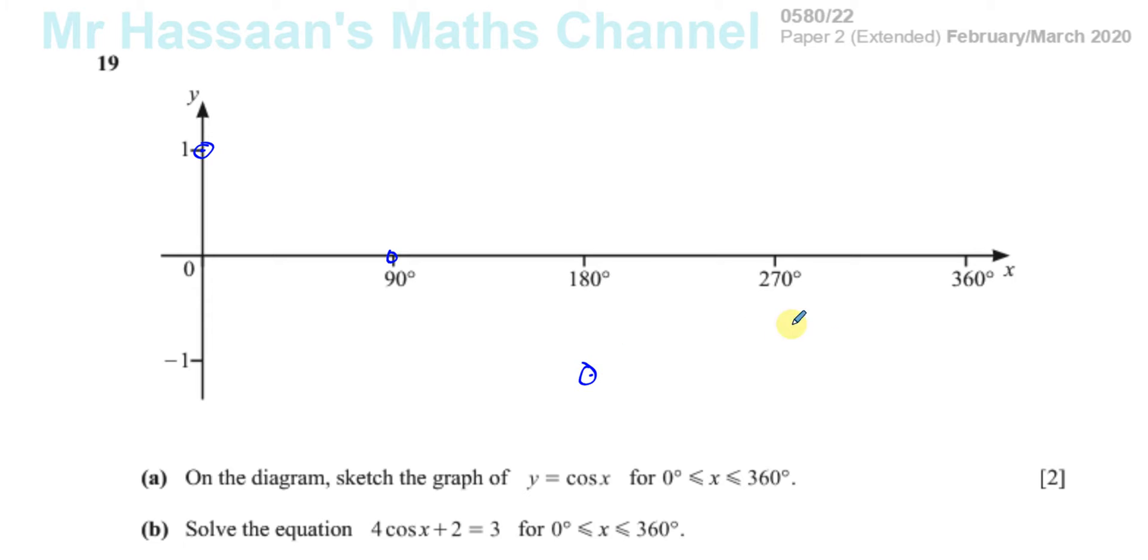And then we've got cosine of 270°, which is zero, and your calculator would confirm that. And cosine of 360°, which is back up to 1 again. Okay, so these are the points that we plotted. They're not really plotted, we're just showing these points.